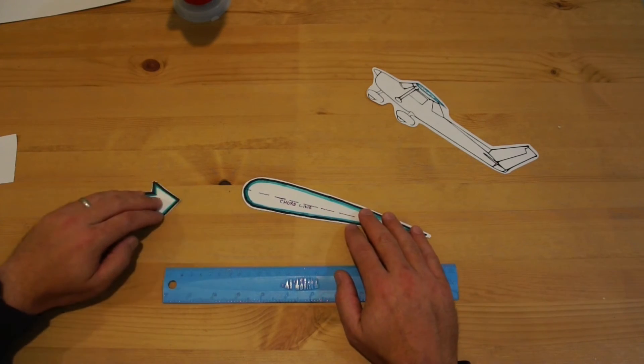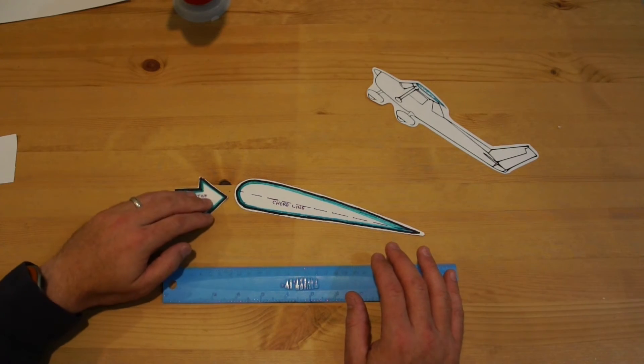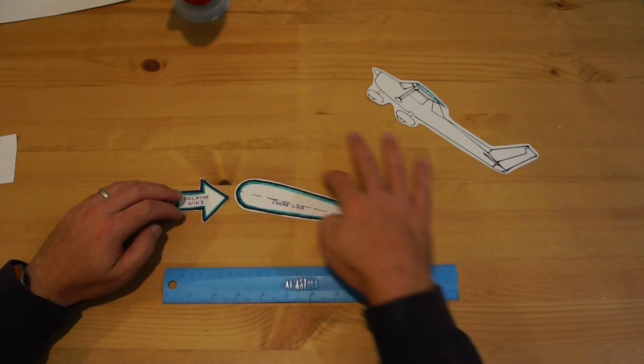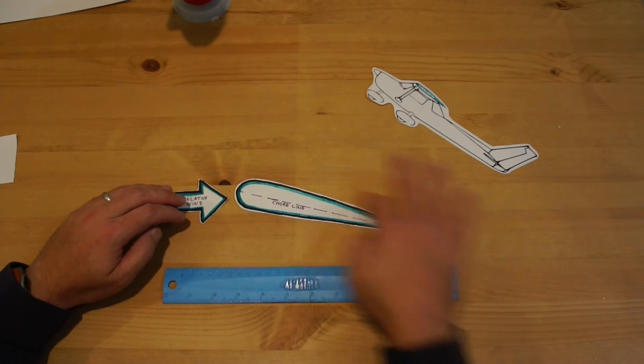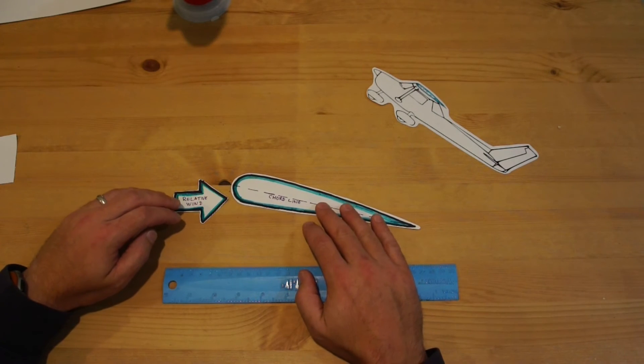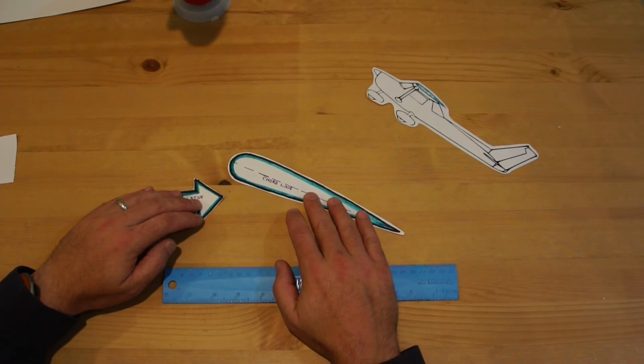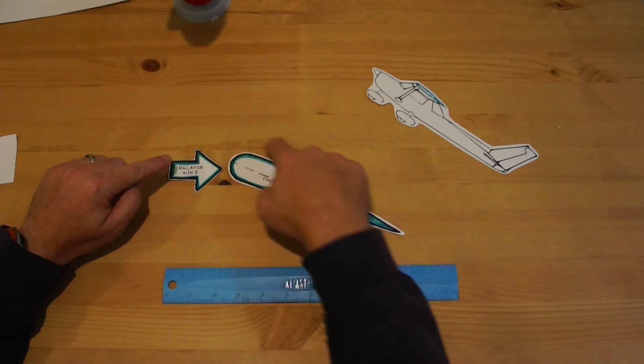So why does it stall? What happens is as the air hits the front of this wing, again we know that by Bernoulli's principle as the air goes over the top of the wing versus the air going under the wing, it has to travel farther, has to go faster, therefore it creates lift. At some point this wing gets to the point where the air no longer sticks to the top of the wing.